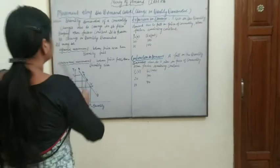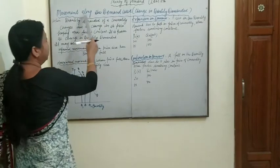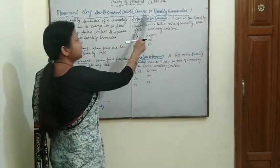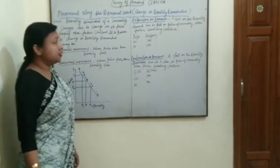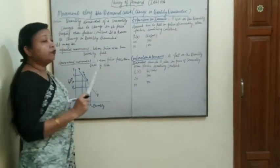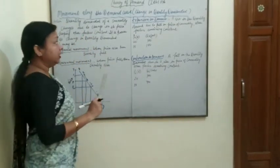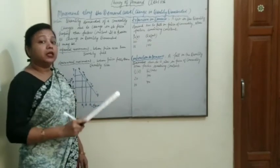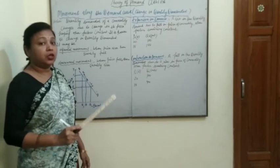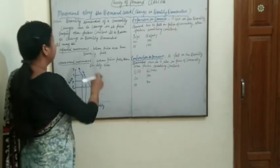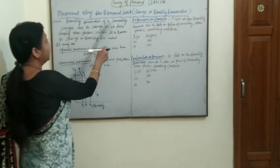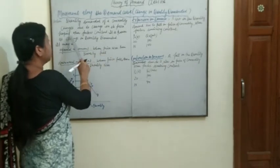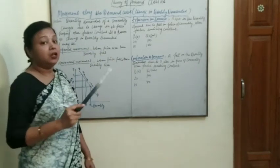Our next topic is movement along the demand curve, also known as change in quantity demanded. Change in quantity demanded occurs due to change in the own price of a commodity, when quantity demanded changes due to a change in its own price, keeping all other factors remaining constant.